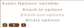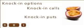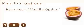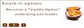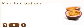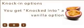Knock-in options come in four basic formats: knock-in calls, knock-in puts, double knock-in calls, and double knock-in puts. A knock-in option is an option that automatically becomes a normal vanilla option when the underlying currency pair trades at or beyond a specified price level, known as the barrier, before expiry. In other words, you get knocked into a vanilla option if the currency pair touches a certain price.